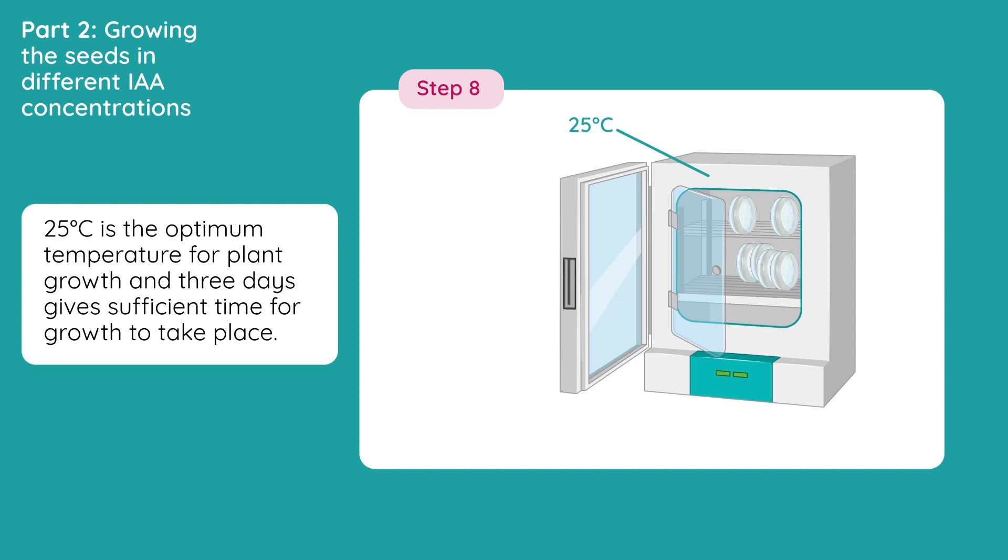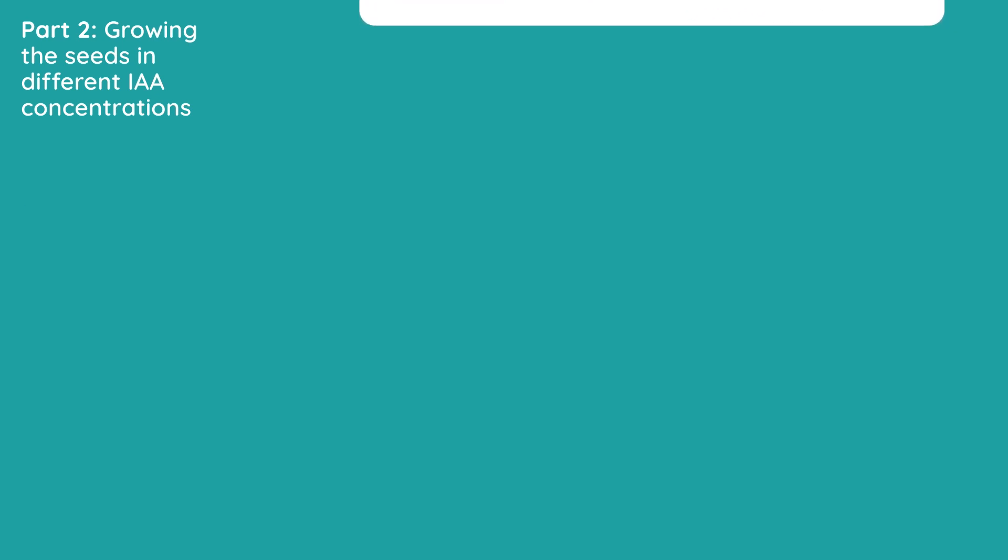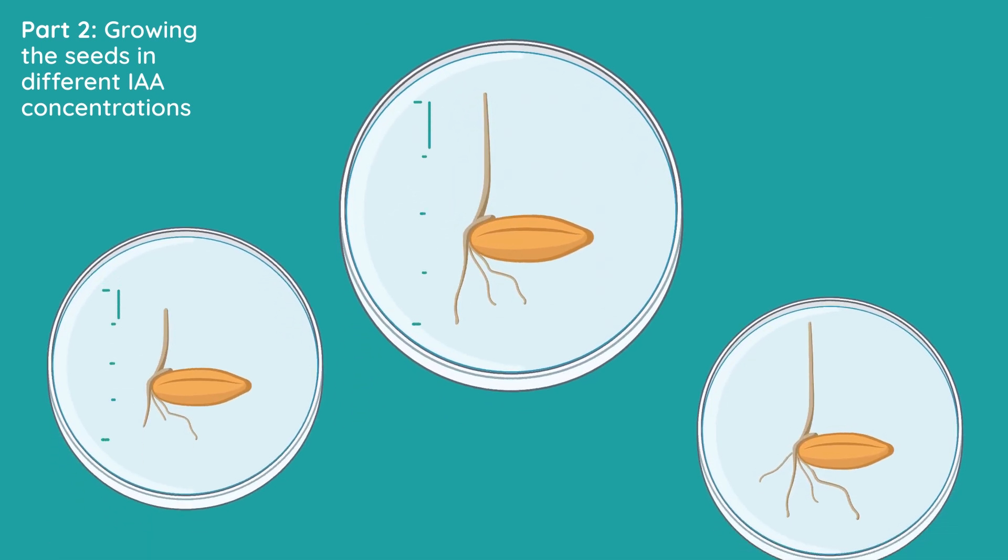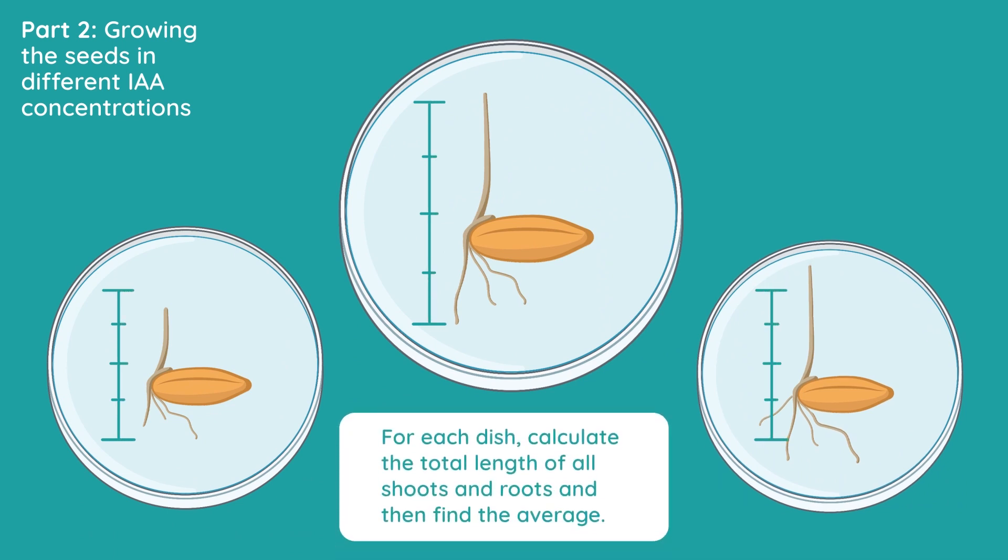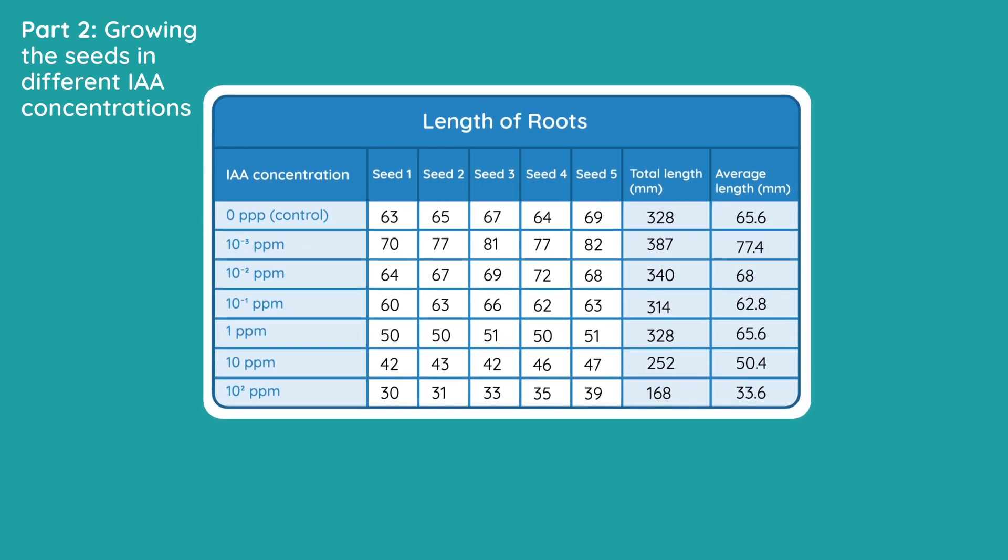After 3 days, return to the petri dishes, and measure the lengths of roots and shoots of the seedling in each dish. For each dish, calculate the total length of all shoots and roots, and then find the average. Record your results in a table similar to the one below.